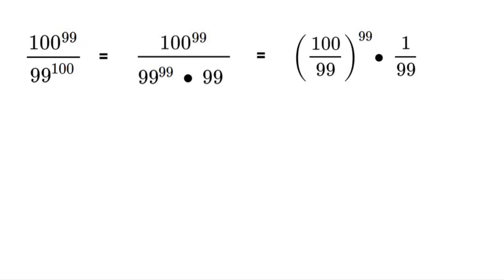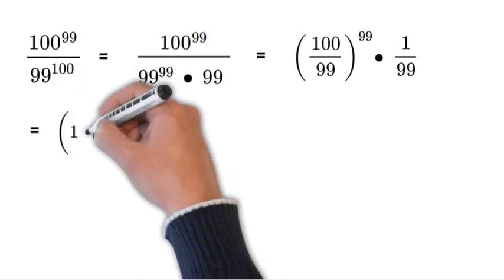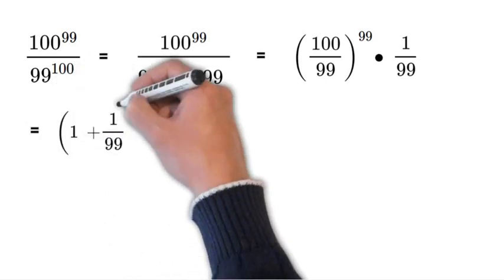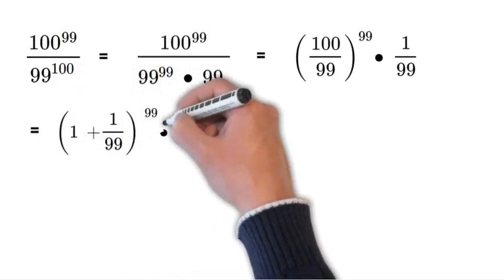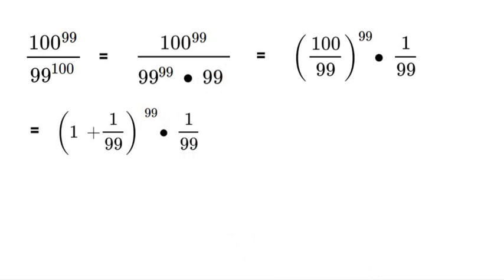Now the next step is we can agree that 100 over 99 is equal to 1 plus 1 over 99. So if we rewrite this again, we'll have 1 plus 1 over 99 to the 99th power times 1 over 99.